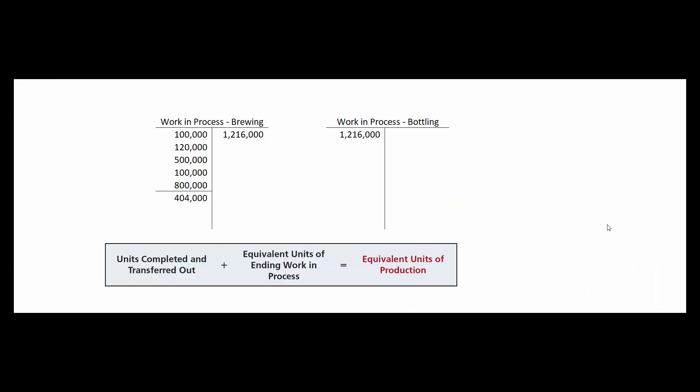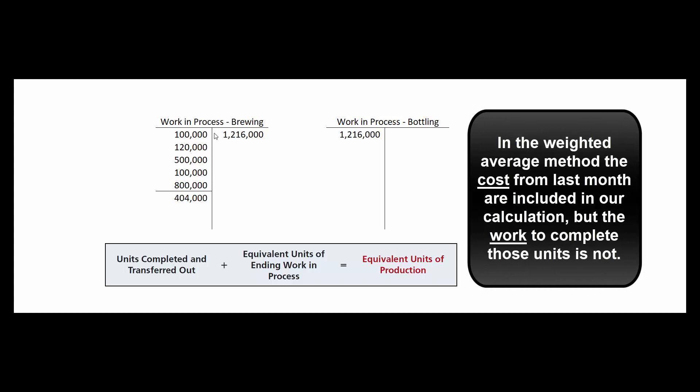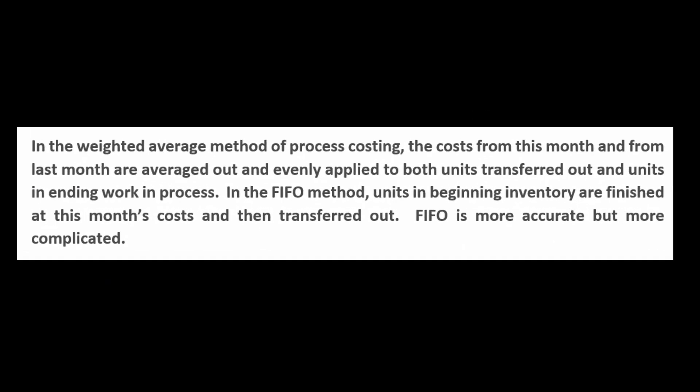The challenge of this method is that the costs from last month get included in our calculations for this month, but the work done to finish up those units does not get included. That's why we call it the weighted average — last month's costs get lumped in with this month's costs. That problem gets fixed in the FIFO method, which is a lot more complex, which is why most people just use the weighted average method. Hope that helps — thanks for coming!